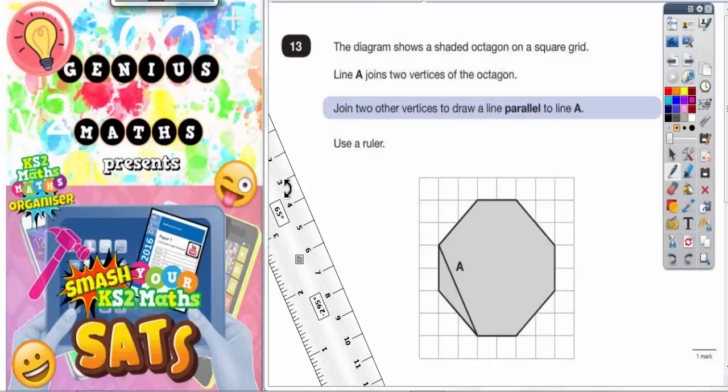Question 13. The diagram shows a shaded octagon on a square grid. Remember an octagon has eight sides.